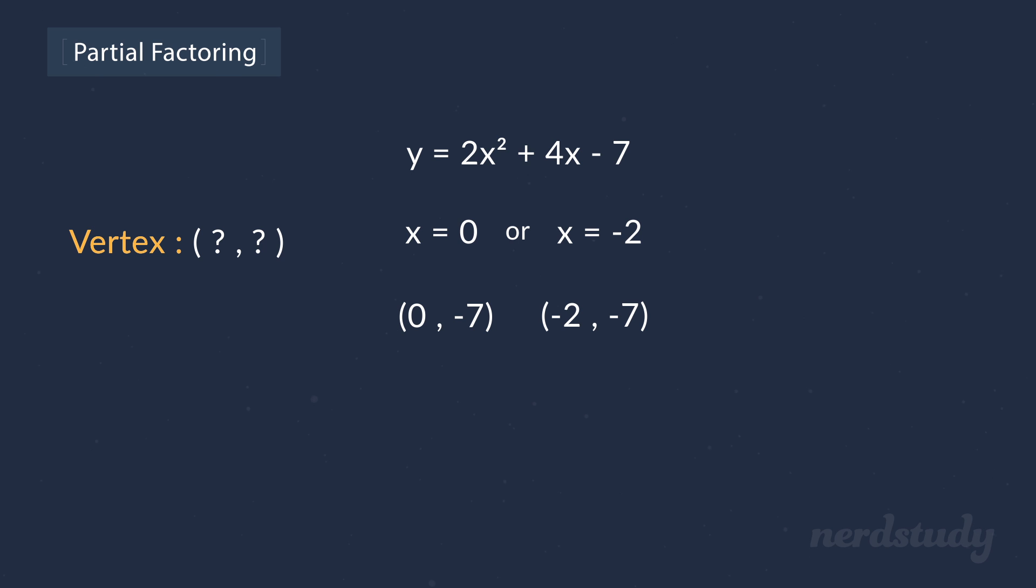How would we find it from here on? Well, since these two points we found were on the same y value, all we have to do is add the two x values and divide it by 2 to get the vertex's x value. So, we've got 0 plus negative 2 divided by 2, which is equal to negative 2 over 2, which equals negative 1.